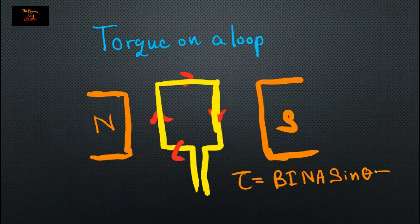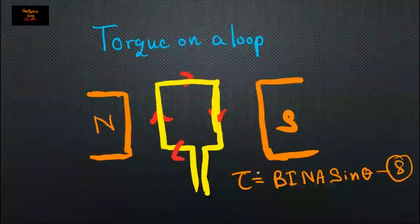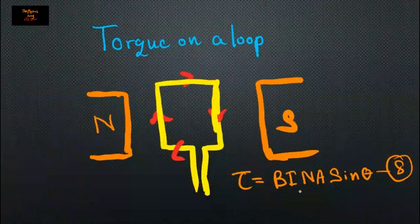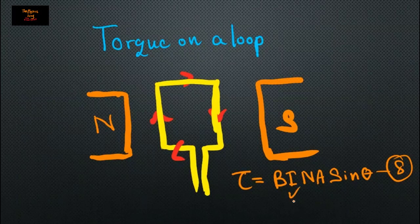Moving into the eighth equation — torque on a loop. The magnetic field applies a torque on a loop: torque tau equals B I n A sine-theta, where I is the current, n is the number of turns, A is the area, and theta is the angle.